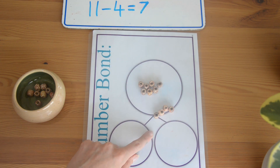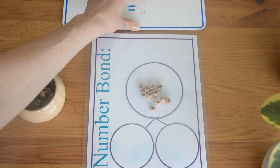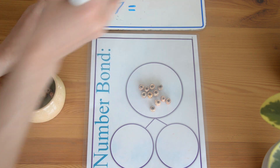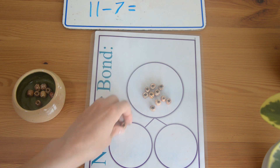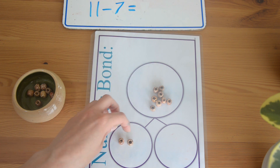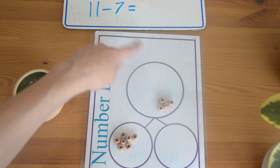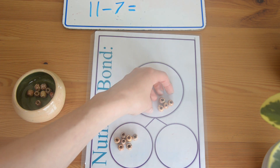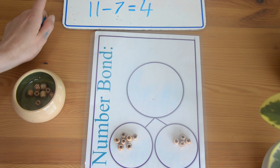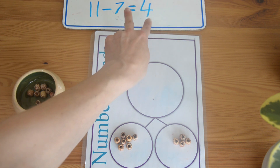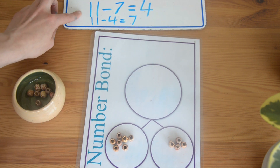Now, want to see something cool? If I put all of these back into the whole number and change one part to seven, let's see if we get the same number. Eleven take away seven — let's put in the part of seven: 1, 2, 3, 4, 5, 6, 7. And the other part is: 1, 2, 3, 4. So eleven take away seven equals four. It doesn't matter where the part is — you can switch it around: eleven take away four equals seven, or eleven take away seven equals four.